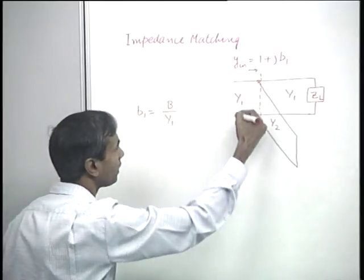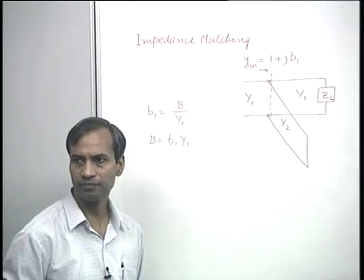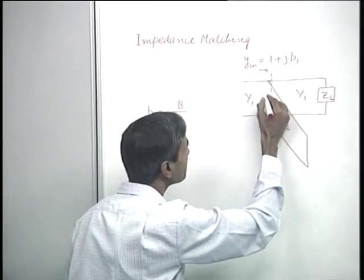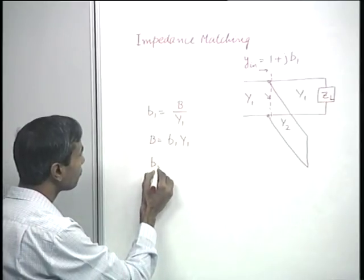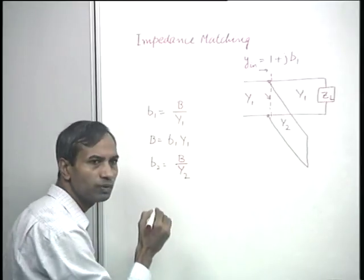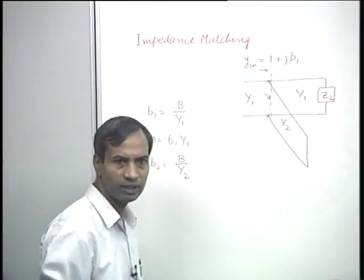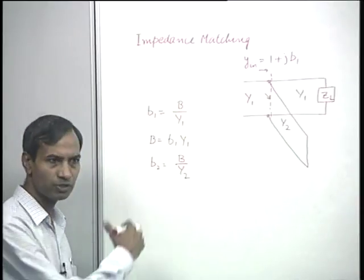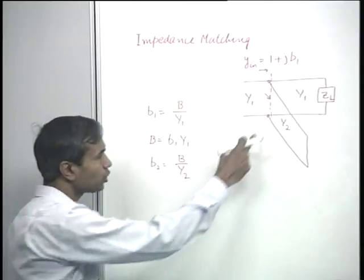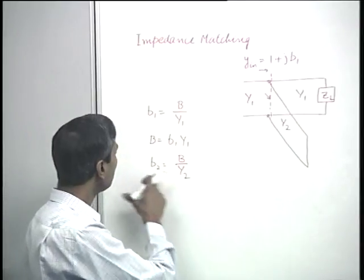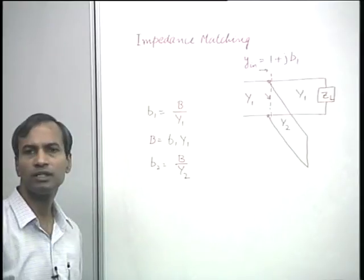This means b₁ equals the actual susceptance b divided by y₁, so the actual susceptance required at this plane is b = b₁·y₁. Therefore, the normalized susceptance required on the stub transmission line is b₂ = b/y₂, the characteristic admittance of the stub. When the characteristic admittances are common, this problem does not arise; if they are different, we must recalculate the normalized susceptance for the stub and then use it in the Smith chart. This should clarify any earlier confusion.